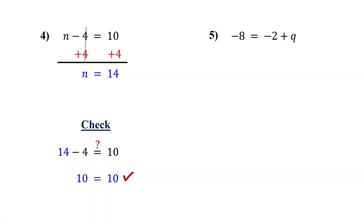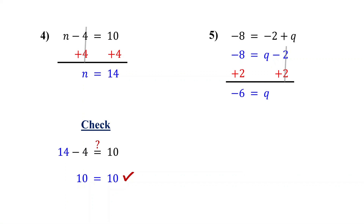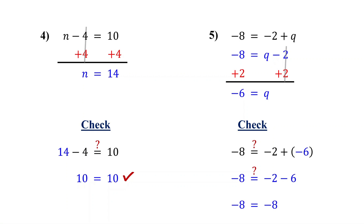Try this with a variable on the right side. Here, negative 2 plus q is the same as q minus 2, just written in a different order. Now you can clearly see that 2 is being subtracted from q. So to get q by itself, add 2 to both sides. Negative 2 plus 2 is 0 — they cancel out, leaving just q. On the left, negative 8 plus 2 is negative 6. So the solution is q equals negative 6. To double check, plug in negative 6 for q in the original equation. Negative 2 plus negative 6 is the same as negative 2 minus 6, which equals negative 8. Both sides match, so you got it right.